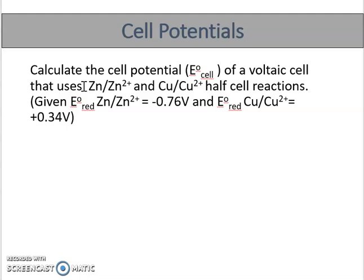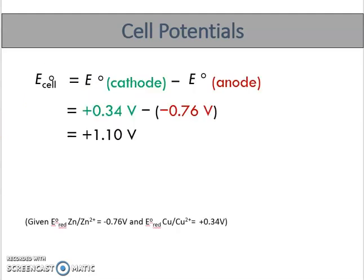The E⁰reduction values for each half-cell reaction are obtained from the standard reduction potential table, but don't worry — these values will be given in the question. The first step is to determine which half-cell reaction is the cathode and which is the anode, based on the standard reduction potential values given. E⁰reduction for Zn/Zn²⁺ is −0.76 V and for Cu/Cu²⁺ is +0.34 V.